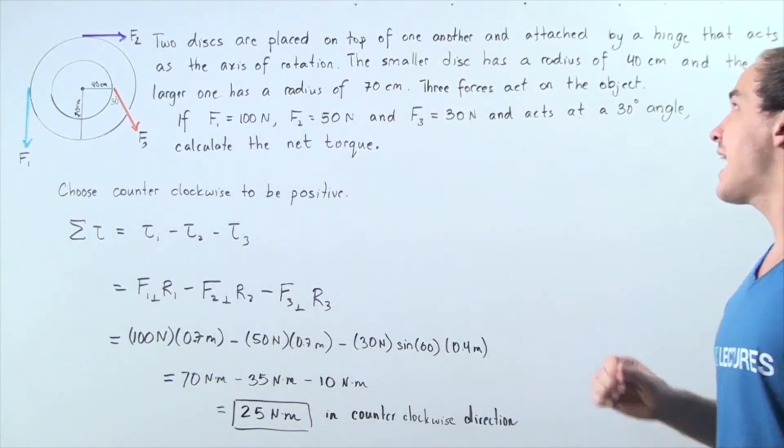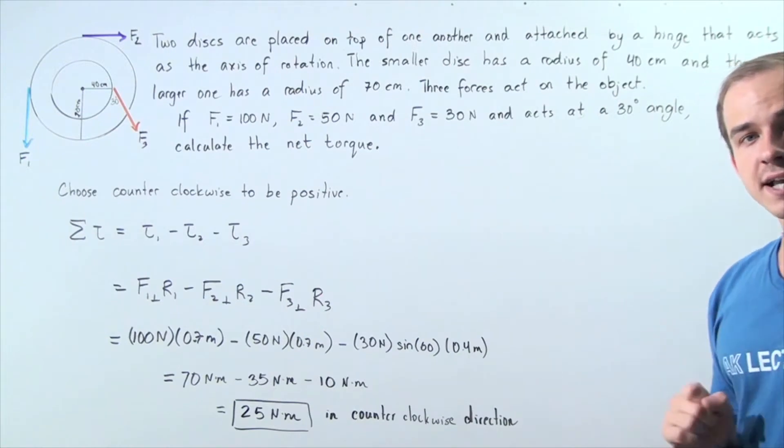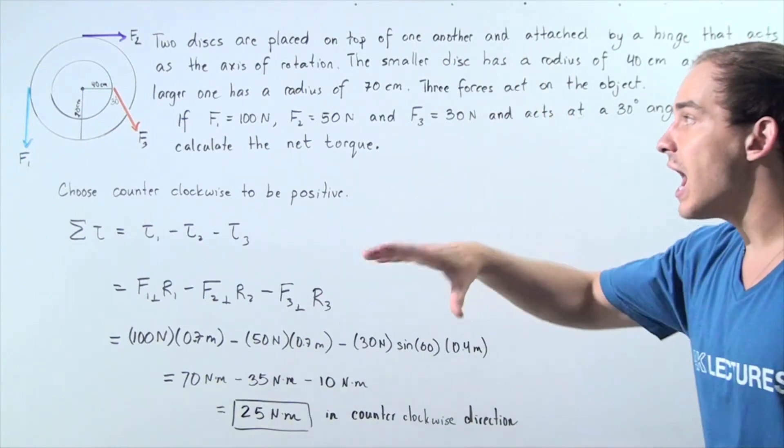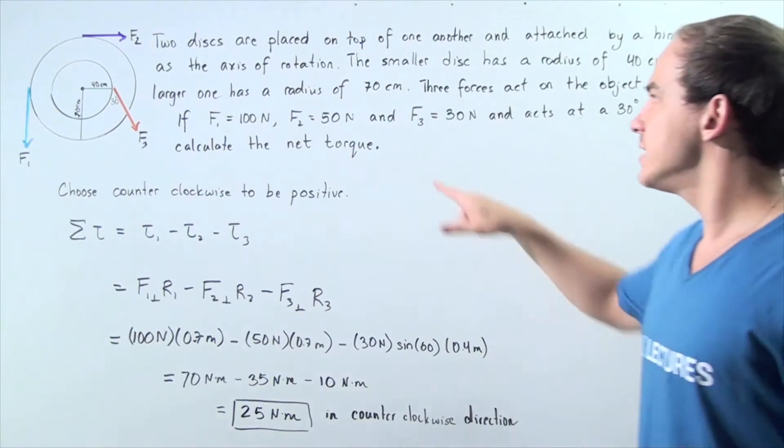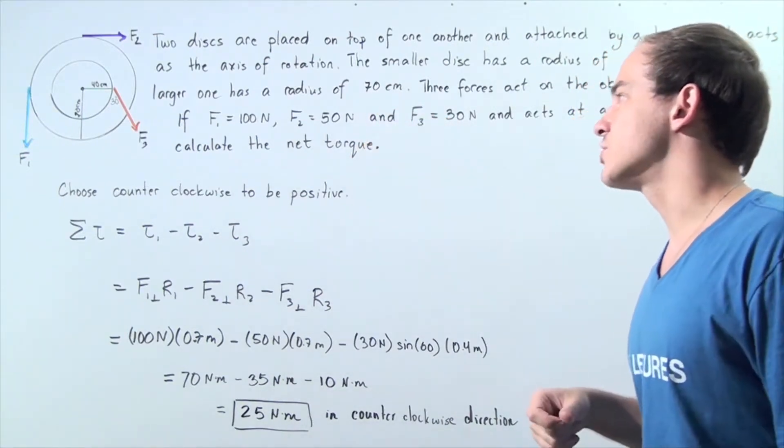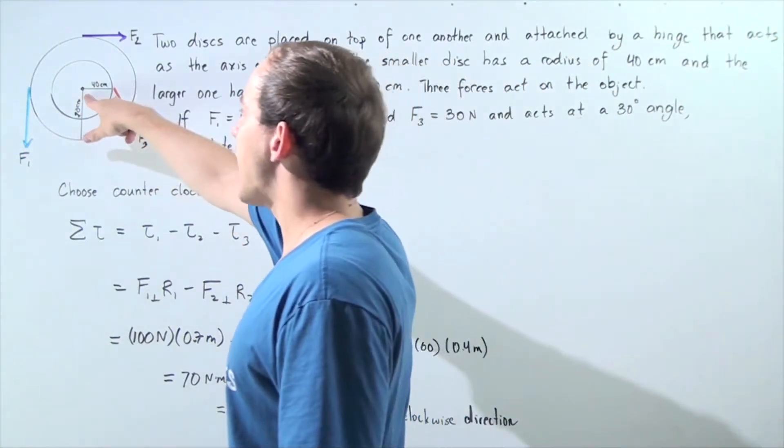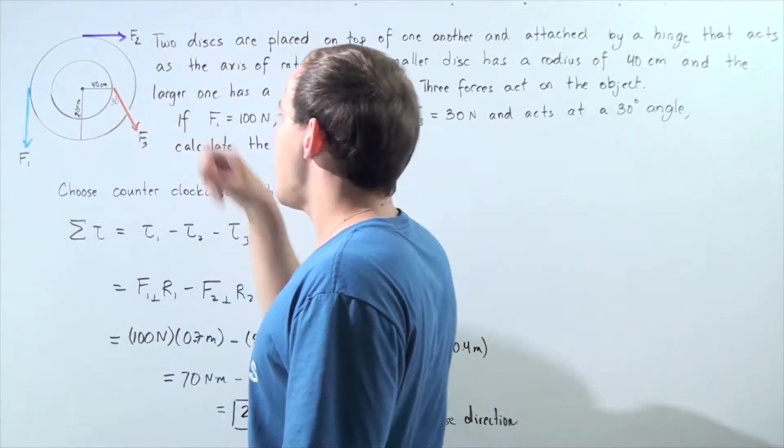The smaller disk has a radius of 40 centimeters and is placed on top of a larger disk that has a radius of 70 centimeters. They rotate about the axis of rotation found at the center.